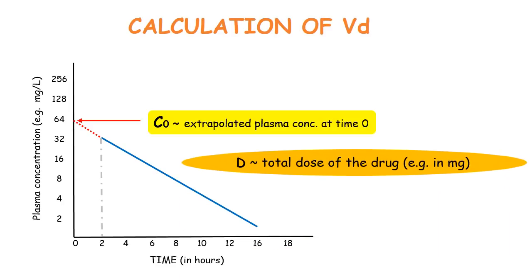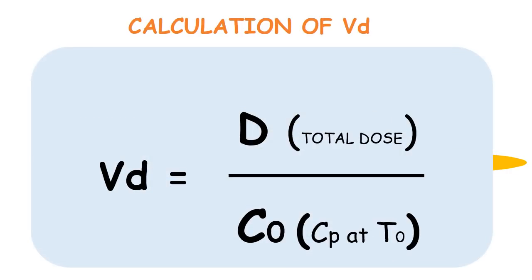With that, the calculation of volume of distribution is pretty basic arithmetic. If we divide the total dose D by C0, that is the plasma concentration at the time zero, we will get the volume of distribution.